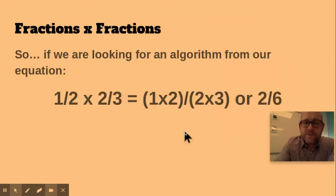But what about the algorithm? So if we're looking at our algorithm for our equation, we have one half times two thirds. Basically, I'm going to take my numerators, one and two, and multiply those together and our denominators, two and three.